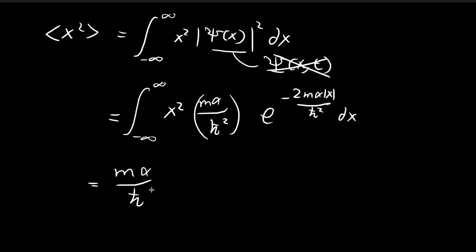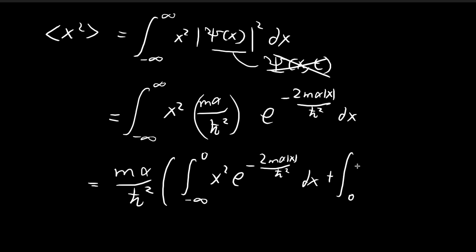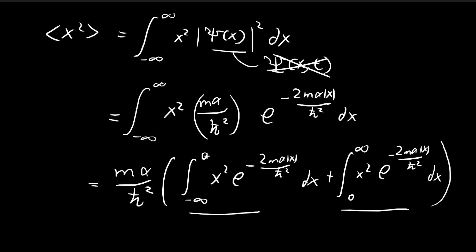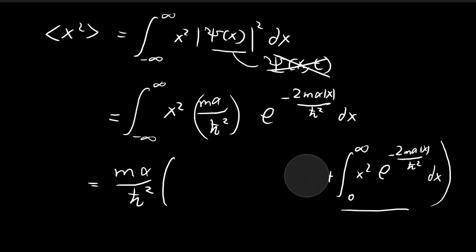We substitute the wave function in and square the constants at the front, giving us mα/ℏ² times e to the power of negative 2mα|x|/ℏ² dx. We then break this integral into two parts: from negative infinity to 0 and from 0 to positive infinity. Both integrals give the same result because of the absolute value sign, so we can just calculate one integral and multiply by two.